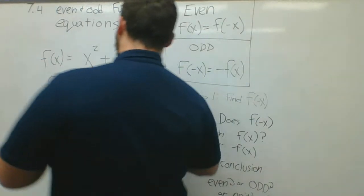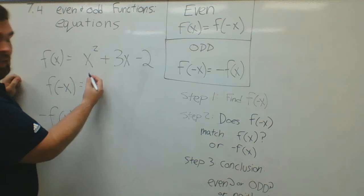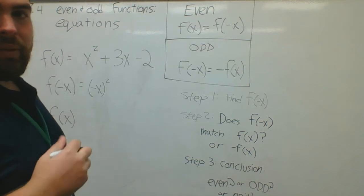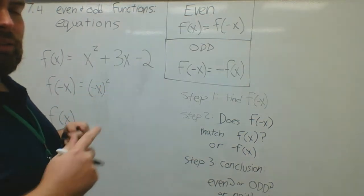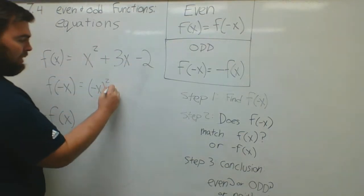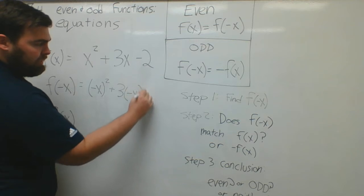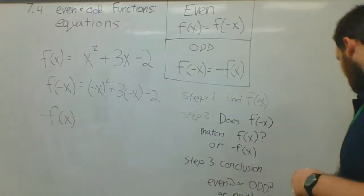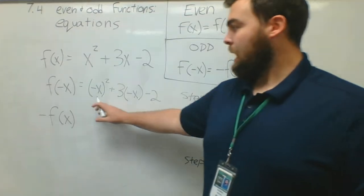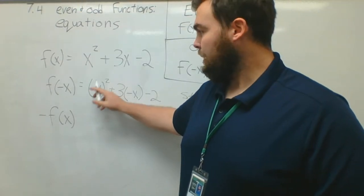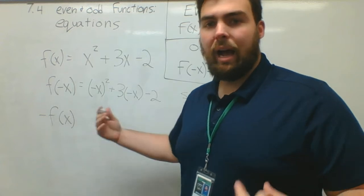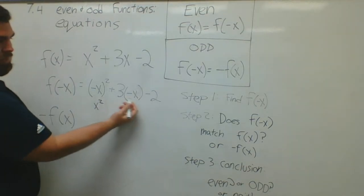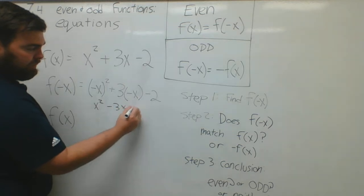All I'm going to do when I want to change this to f of negative x is rewrite this, but everywhere there's an x, I'm going to replace it with parentheses negative x. I do it exactly like that because when I get into more complicated problems, it will kind of change how things work — it's multiplying something. So this becomes: parentheses negative x squared, plus 3 times parentheses negative x, minus 2. We can simplify: negative x times negative x gives positive x squared, and 3 times negative x gives minus 3x, then minus 2.